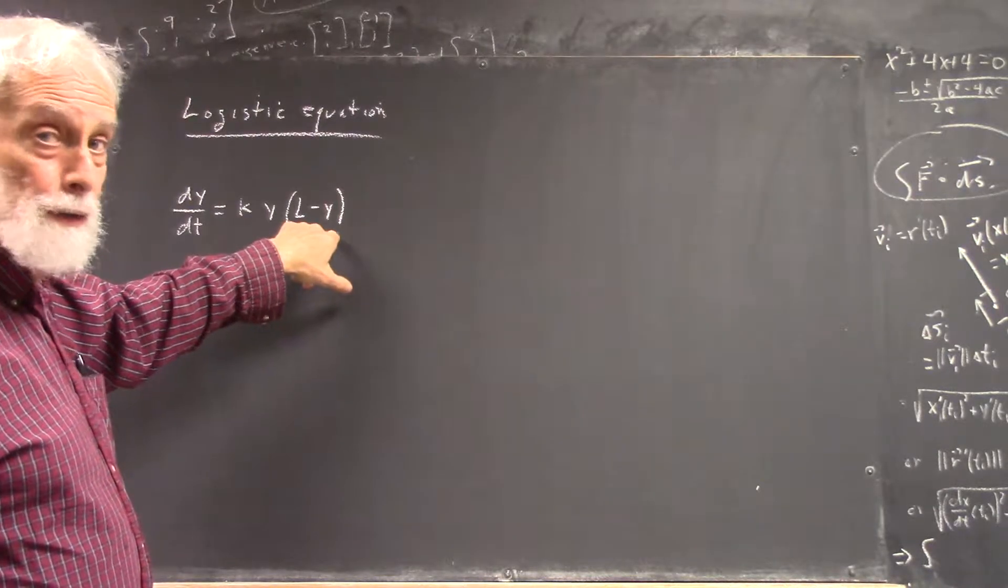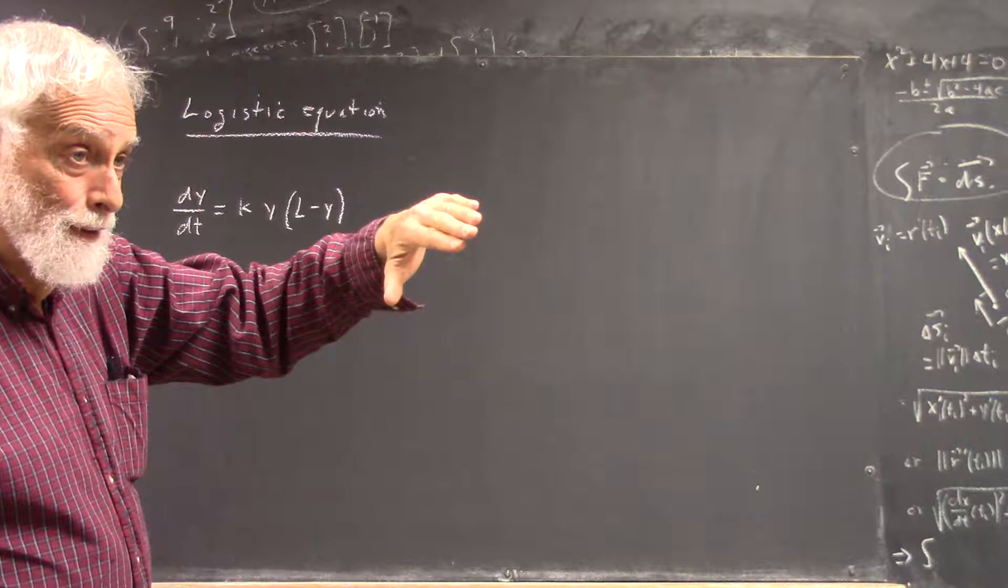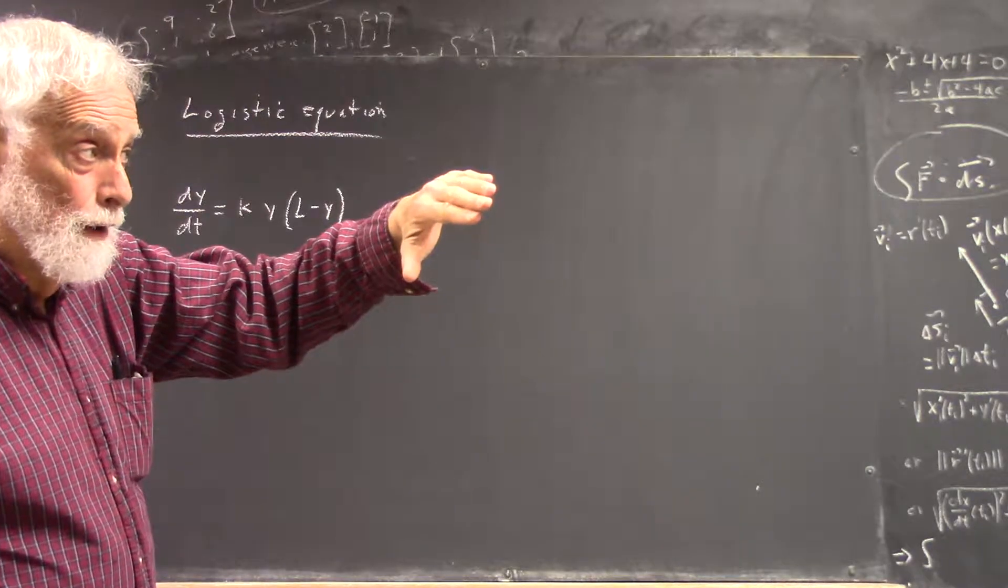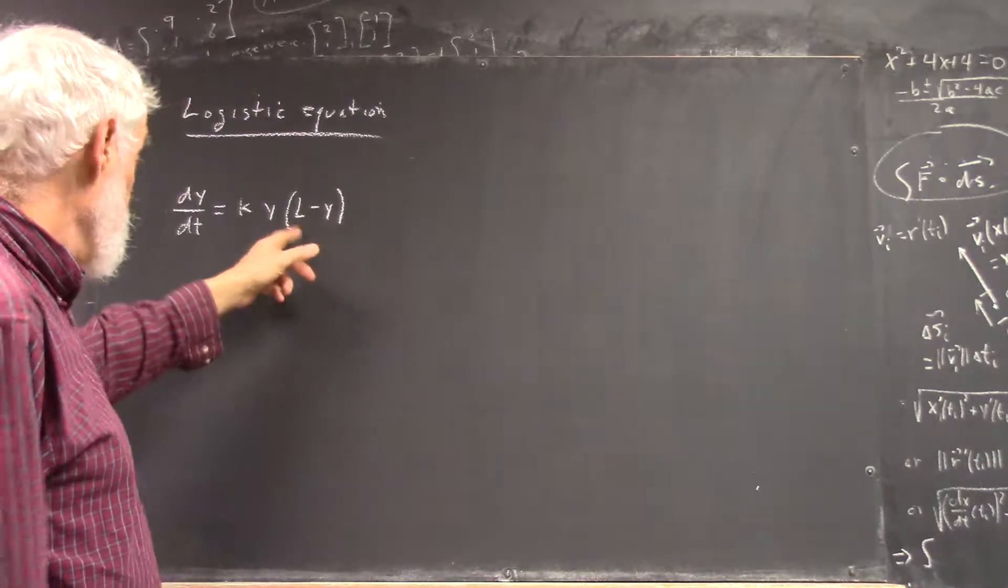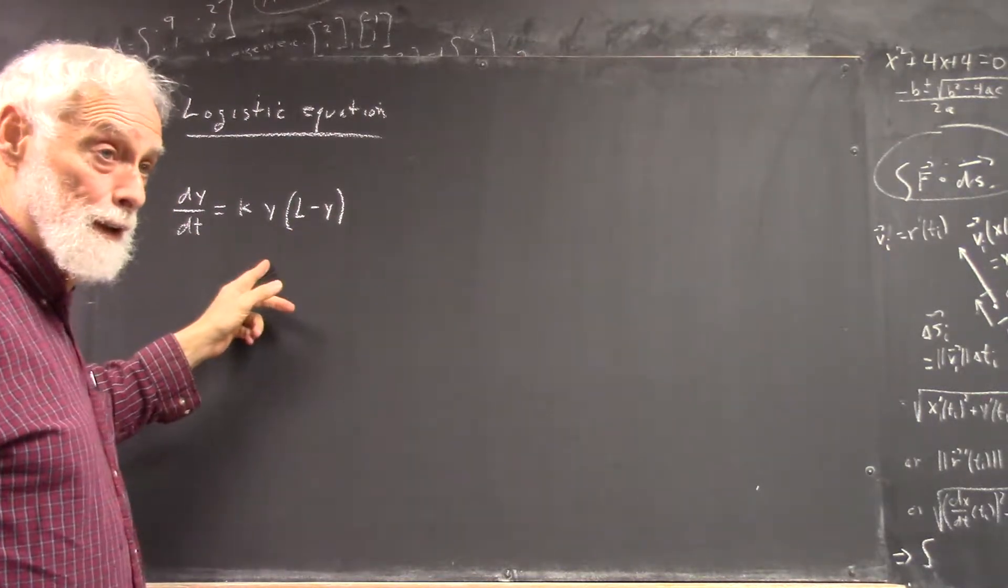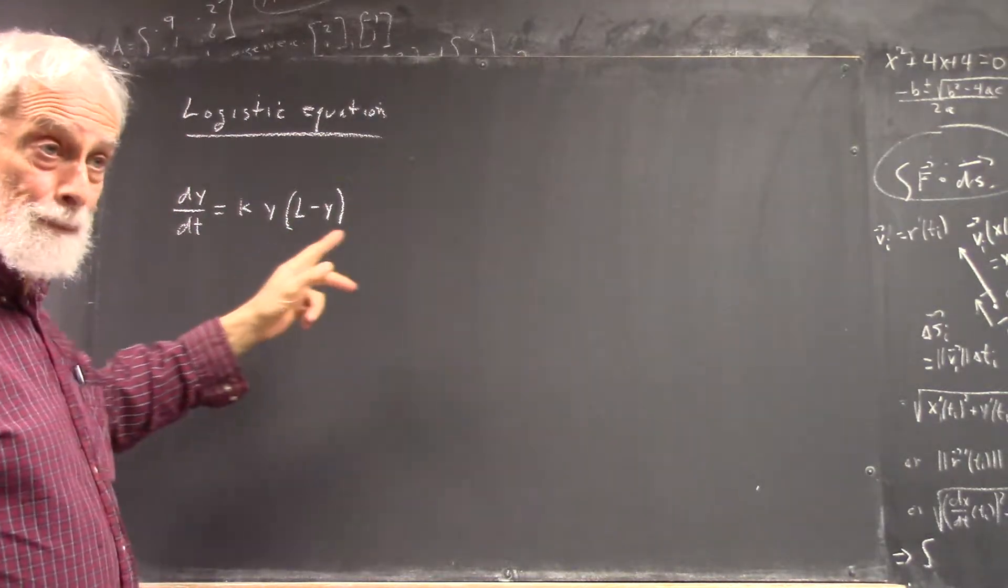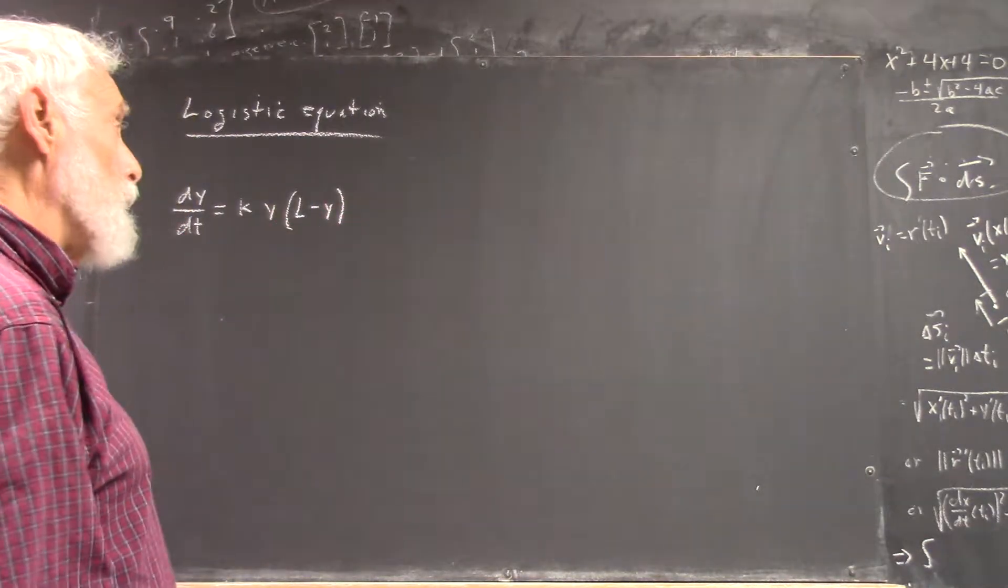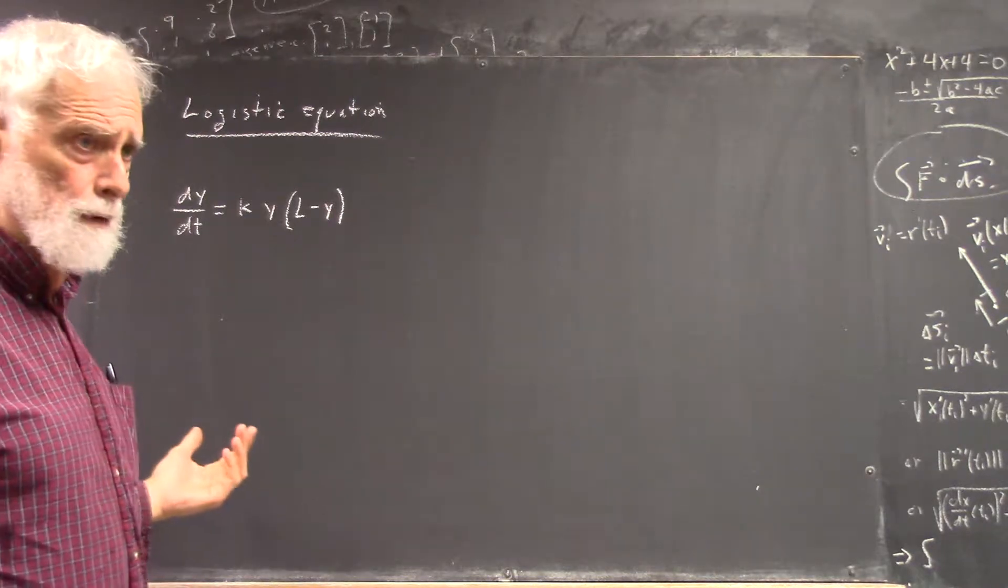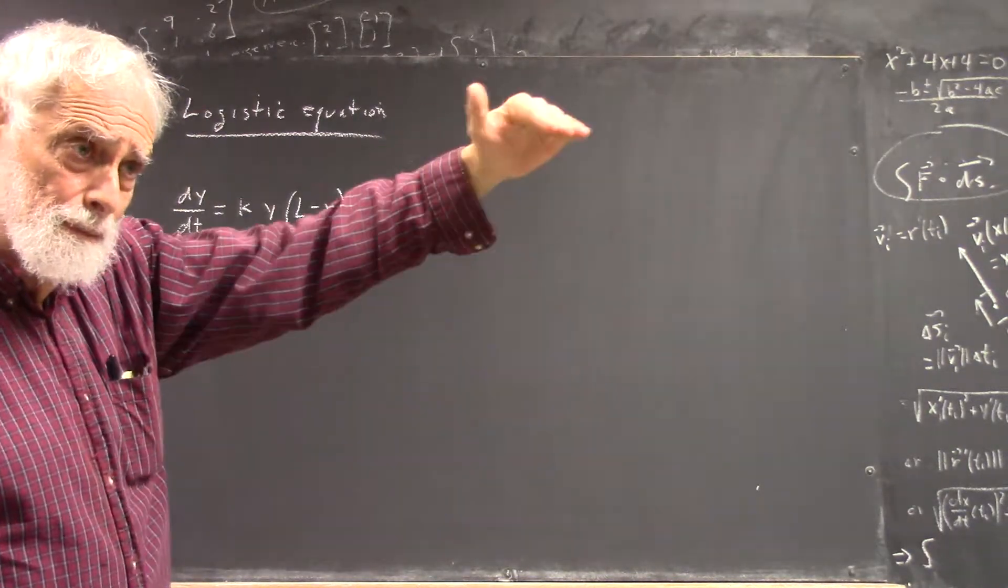And what this gives you is a growth that when you get close to y equals L, levels off, because the rate of change, which is dy/dx or dy/dt, approaches zero. That gives you the sigmoid. And you probably saw this in your calculus course, sigmoid function.